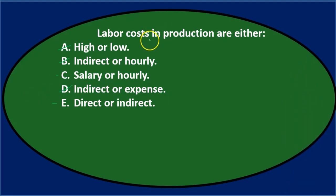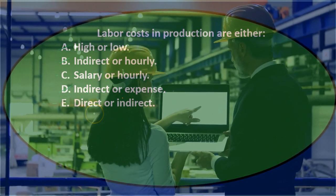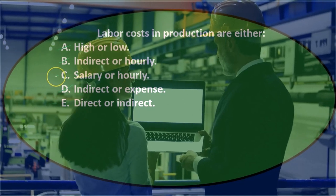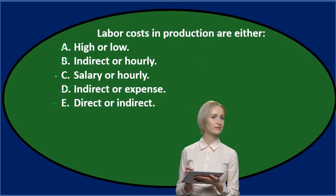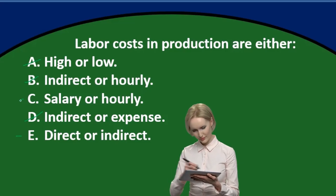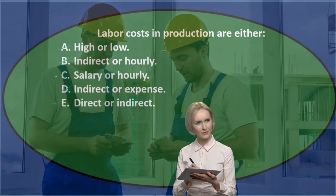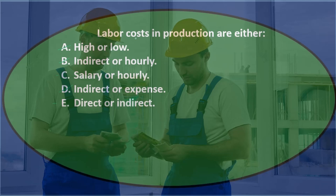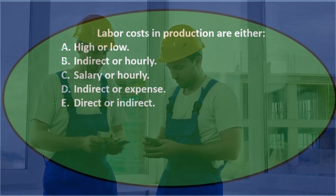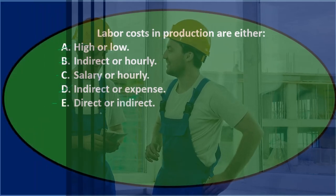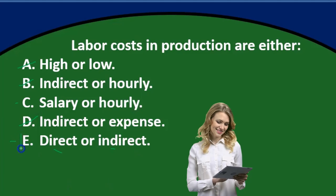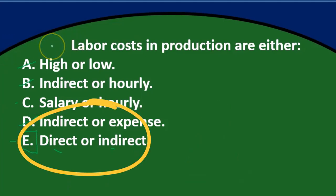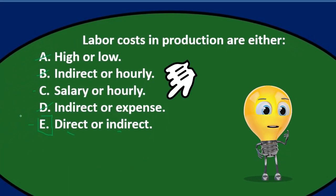The key here is it's labor costs in production. If we're talking about production costs, the more proper answer is either direct or indirect. Option C — salary or hourly — sounds reasonable because that's how we pay people, but that's true for all payroll. We're talking about cost of production here, and we're trying to think of how to apply labor to jobs — either directly related to a job or indirect. So E is the answer: labor costs in production are either direct labor or indirect labor.